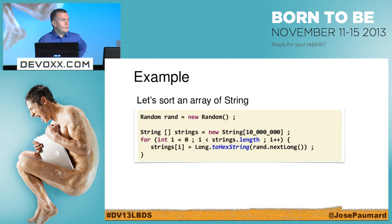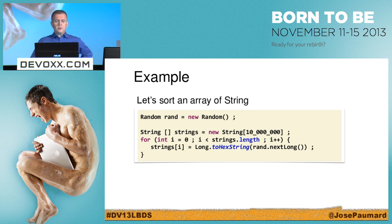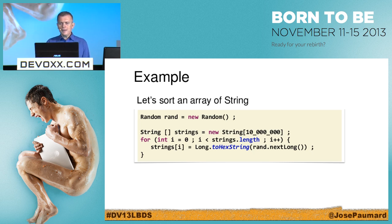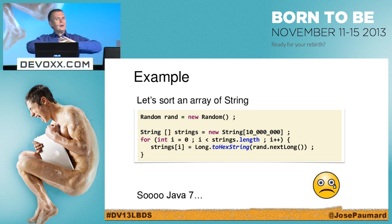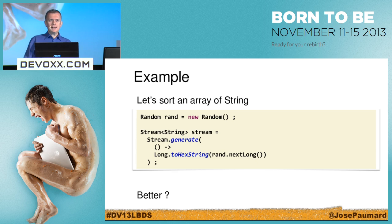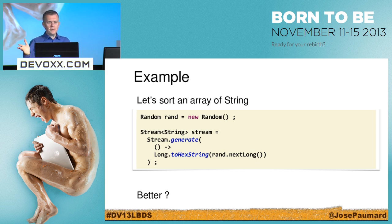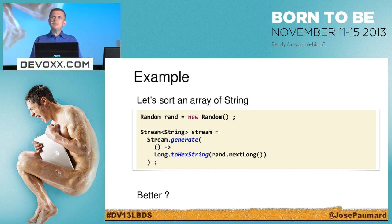Let's sort an array of strings. I can write this code: take a Random object, loop 10 million times, and convert random.nextLong() to a String. But this is really Java 7 code — we live now under the reign of Java 8. So instead I can use the static generate() method of the Stream interface — remember, it's an interface, not a class — and give it a Supplier, which is basically the same call I just wrote.